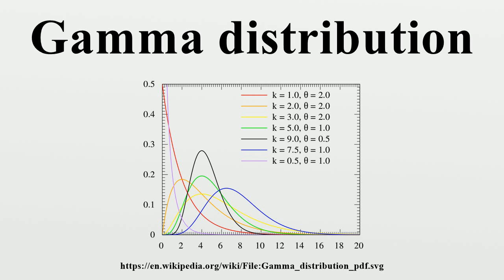Exponential family: the gamma distribution is a two-parameter exponential family with natural parameters k−1 and −1/θ, and natural statistics x and ln(x). If the shape parameter k is held fixed, the resulting one-parameter family of distributions is a natural exponential family. Logarithmic expectation: one can show that E[ln x] = ψ(k) + ln(θ), where ψ is the digamma function. This can be derived using the exponential family formula for the moment generating function of the sufficient statistic.